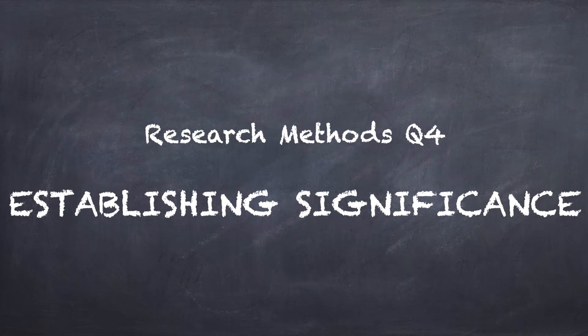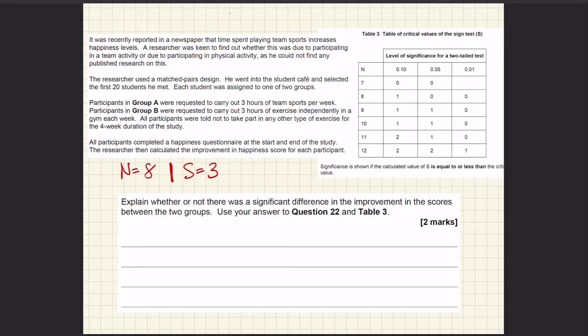Right, so following on directly from the question on establishing our S value, we now have Research Methods Question Four, which is all about determining significance. You can see the question on the screen now.